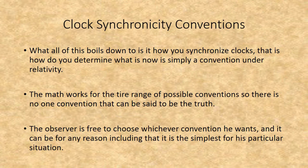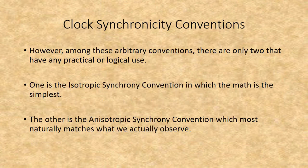What all this boils down to is how you synchronize clocks — that is, how you determine what 'now' is — which is simply a convention under relativity. The math works for the entire range of possible conventions, so there is no one convention that can be said to be the truth. The observer is free to choose whichever convention he wants, for any reason, including that it is the simplest for his particular situation. Among these arbitrary conventions, there are only two that have any practical or logical use: the isotropic synchrony convention, in which the math is the simplest, and the anisotropic synchrony convention, which most naturally matches what we actually observe.